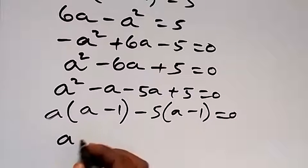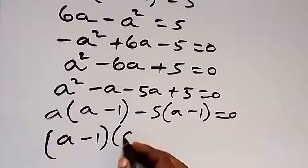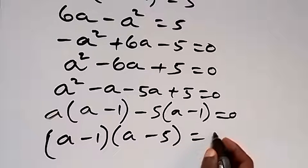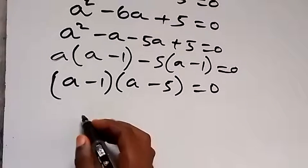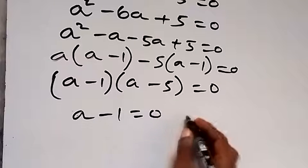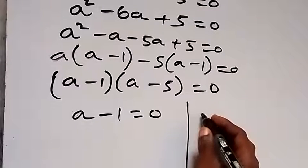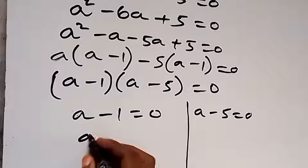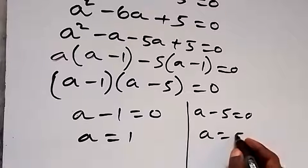Factoring out (a minus 1) gives (a minus 1)(a minus 5) equals 0. So we have two cases: a minus 1 equals 0, giving a equals 1; and a minus 5 equals 0, giving a equals 5.